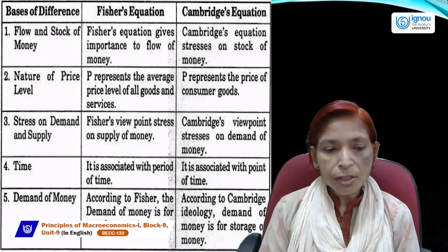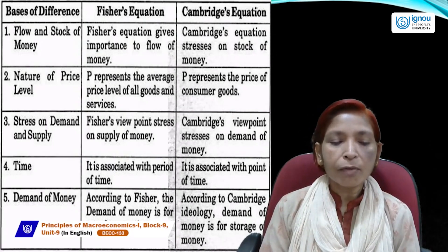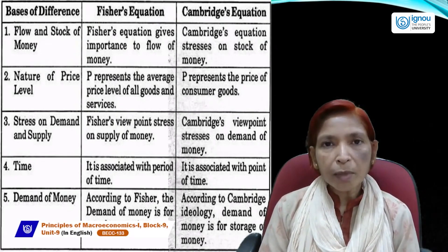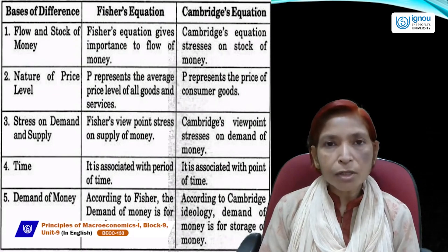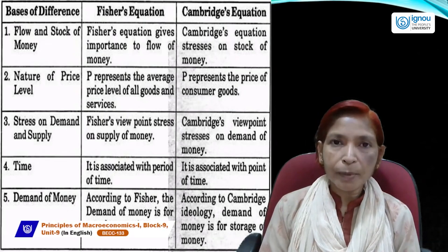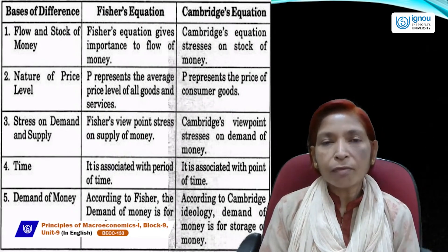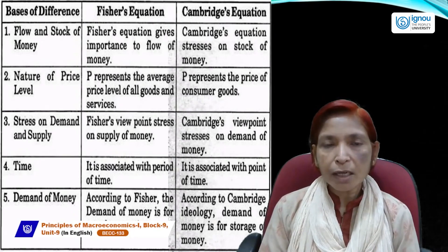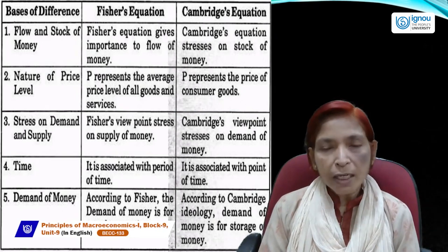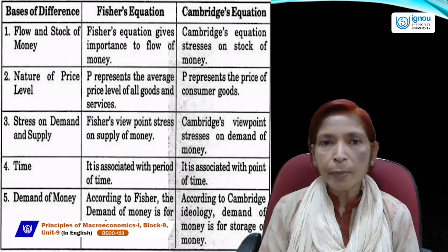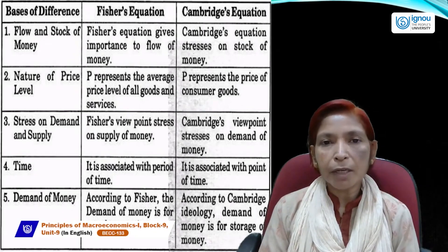According to Fisher, the demand for money is generally for transaction purposes only. But according to Cambridge University economists, people hold money for three purposes: transaction, precautionary, and speculative — as discussed by Keynes, who said money is demanded for these three basic purposes. This is the basic difference between Fisher's equation and the Cambridge equations.